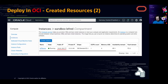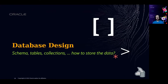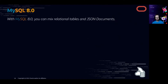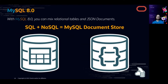Now we're going to work on the data design — schema, tables, collections — and how we're going to store data from the IoT device to MySQL in OCI. An important point: with MySQL 8 you can mix relational tables and JSON documents. SQL plus NoSQL equals the MySQL Document Store — you can mix all that together in MySQL, and of course in MySQL Database Service on OCI too.